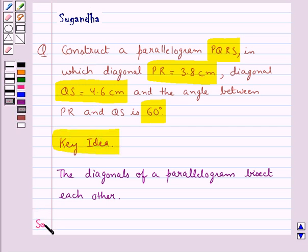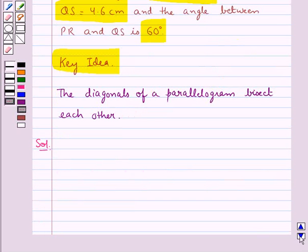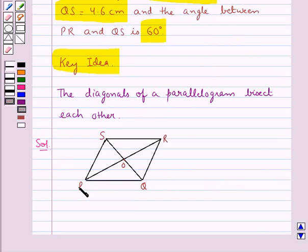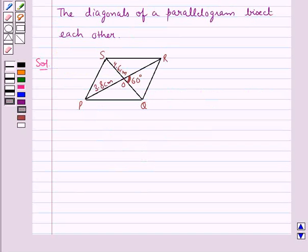Let's proceed with the solution now. We will construct the rough sketch of the parallelogram PQRS. Consider this parallelogram PQRS where we have the diagonal PR is of measure 3.8 cm and the diagonal QS is of measure 4.6 cm and the angle between the two diagonals PR and QS is of measure 60 degrees. Now we should construct the parallelogram step by step.